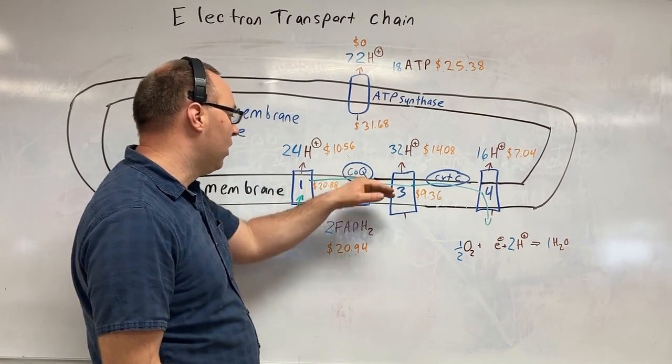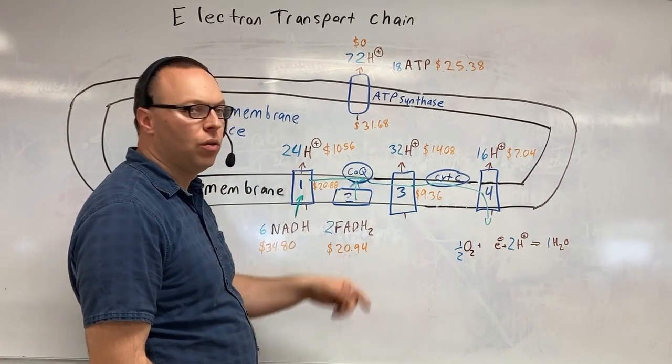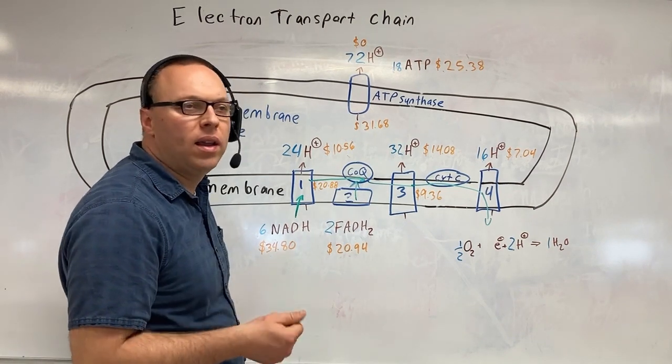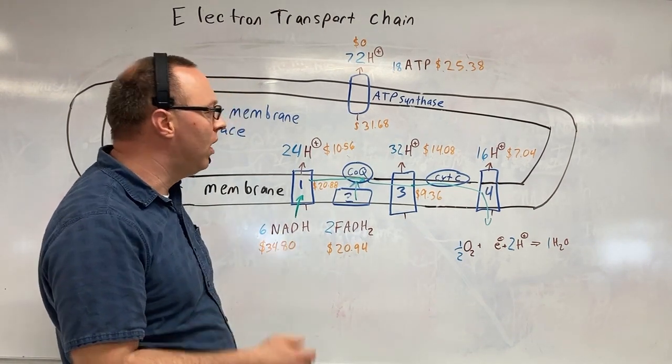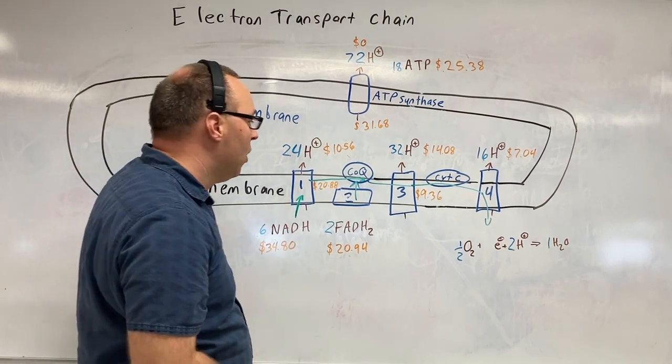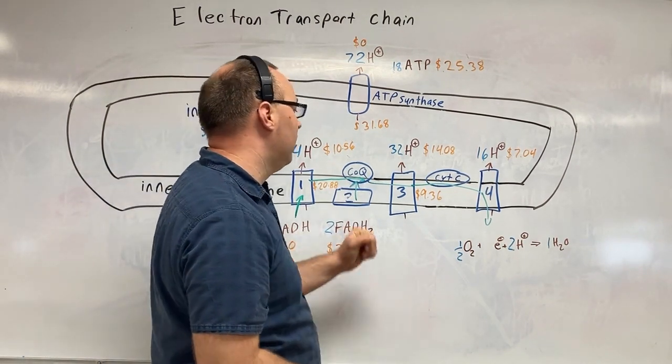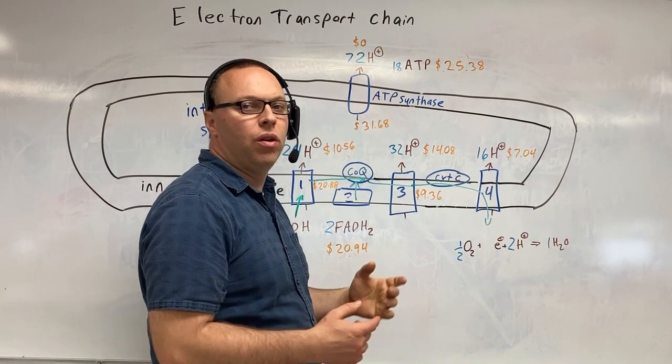Of the $20.94, it goes to the second complex, the CoQ. This is why they say for the elderly CoQ10, replacing this enzyme, by the way. So then both NADH and FADH are going to go through complex III.